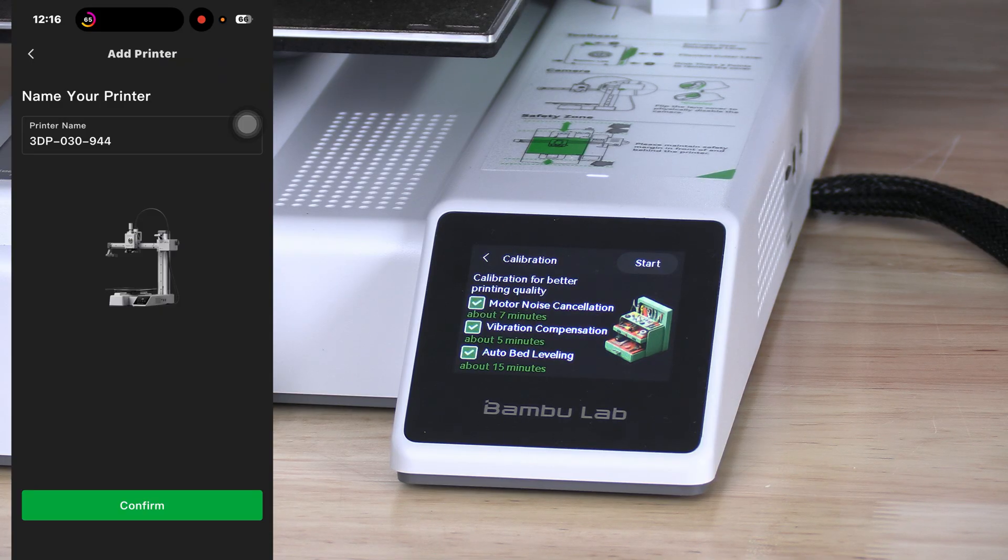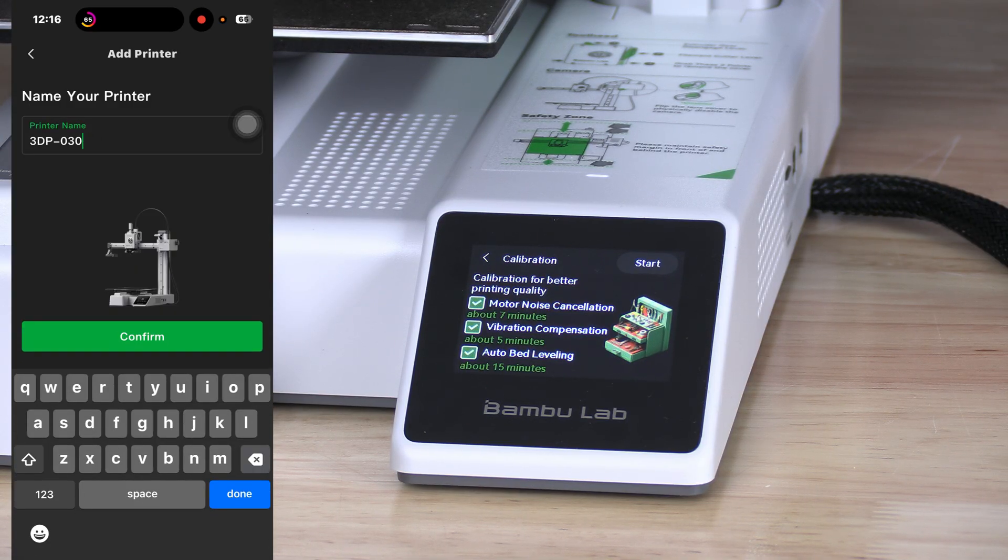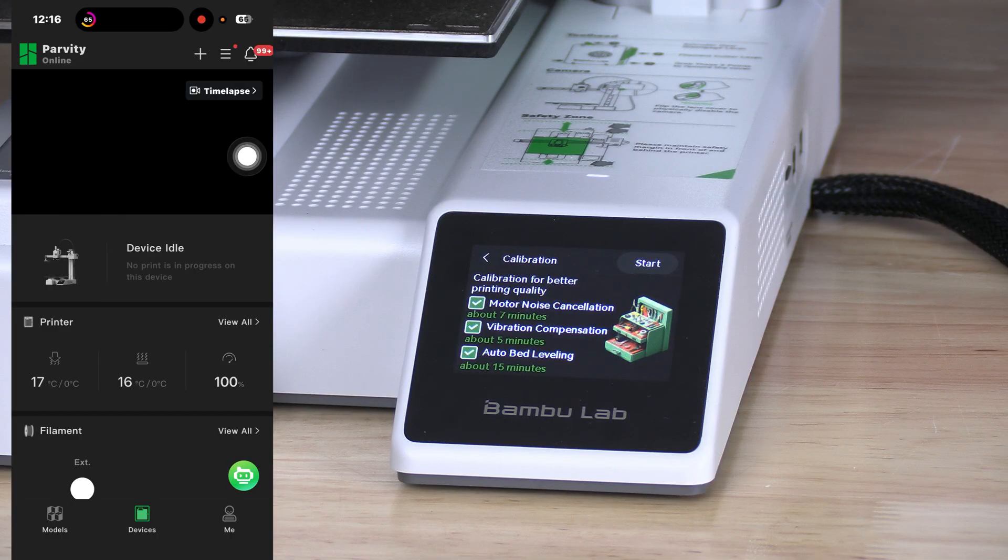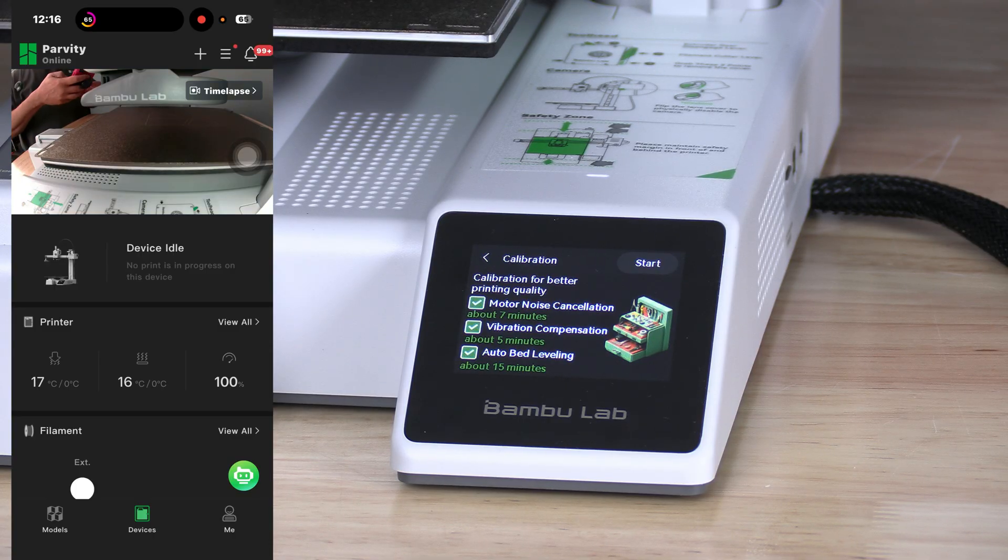Your screen will continue to the calibration screen. On your phone, name this printer. I will name mine Parvati. Press Confirm. You are now connected to your A1 Mini. If you press this button, you should see the camera from your printer. You may go ahead and close the app.